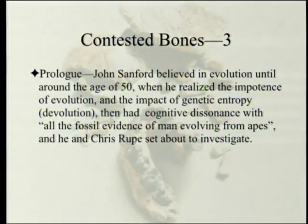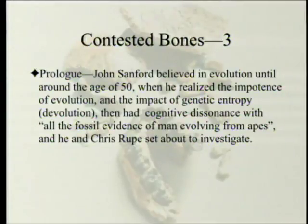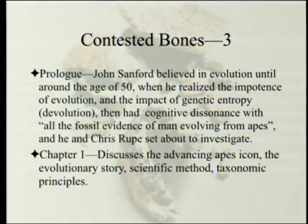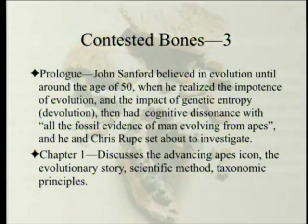We've been through a prologue and two chapters briefly. In the prologue, John Sanford believed in evolution until around the age of 50, when he realized the impotence of evolution and the impact of genetic entropy — what you might call devolution — and had cognitive dissonance with all the fossil evidence that man evolved from apes. He and Chris Rupp set out to investigate. Chapter one discusses the advancing apes icon — going from apes to man — the evolutionary story itself, scientific method and taxonomic principles, laying the groundwork for the rest of the book.